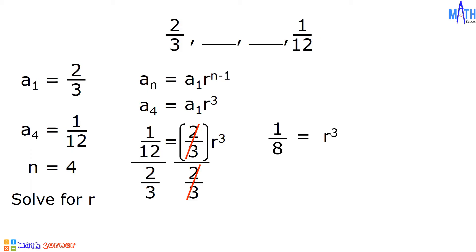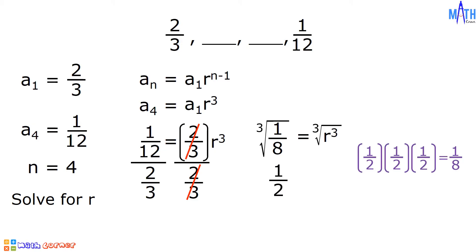To solve for r, let us extract the cube root. The cube root of 1/8 is equal to the cube root of r cubed. The cube root of 1/8 is equal to 1/2, since 1/2 times 1/2 times 1/2 is equal to 1/8. And the cube root of r cubed is simply r. Therefore, the common ratio is equal to 1/2.